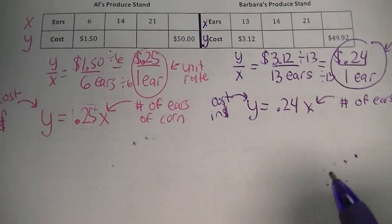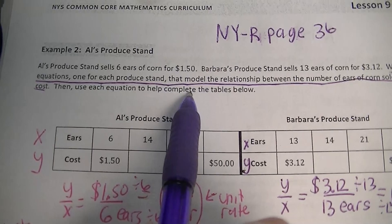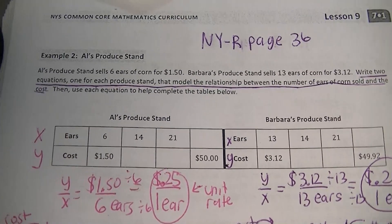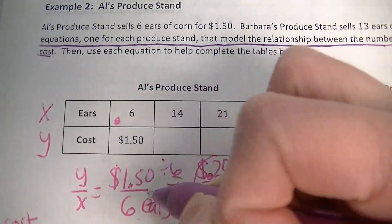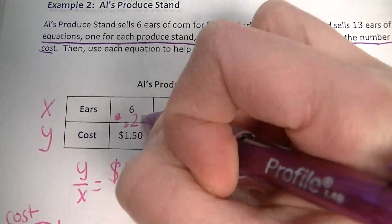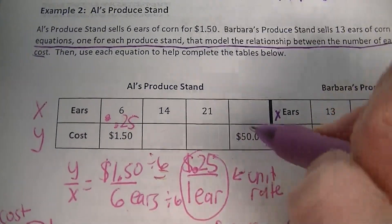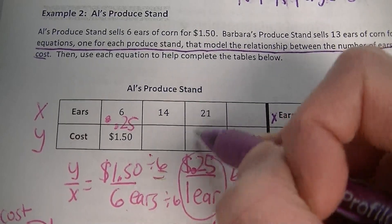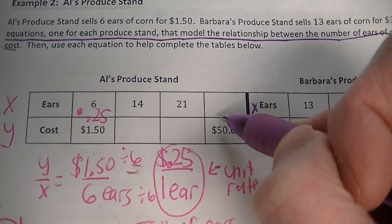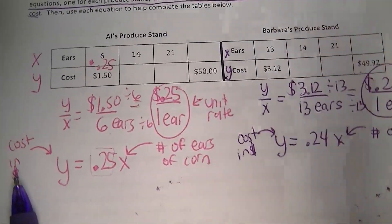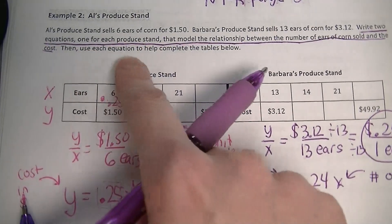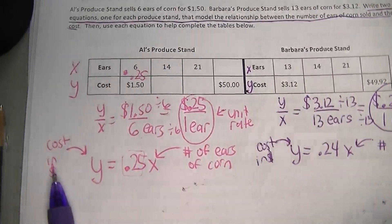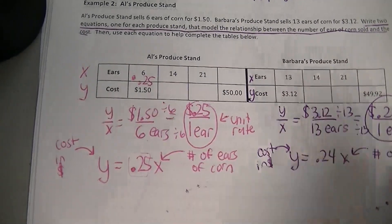We're supposed to use each equation to help complete the table below. What you've done in the past is multiply the x value times the unit rate. So 6 times 25 hundredths gives you $1.50, and so on. You'd multiply 14 times 25 hundredths to get one value, 21 times 25 hundredths to get another, and go 50 divided by 25 hundredths to get the last. But I really want to follow these directions and use the equation to fill in those values, because you need this practice.